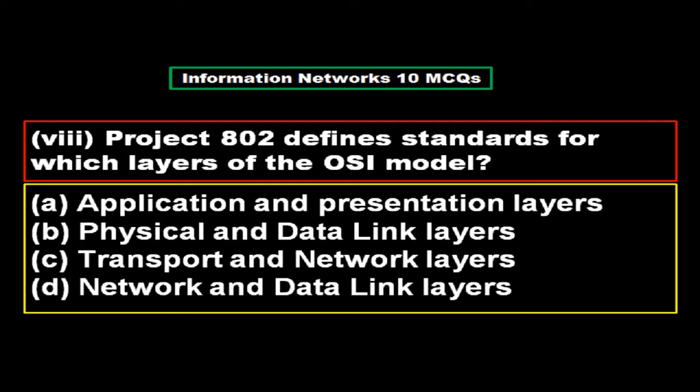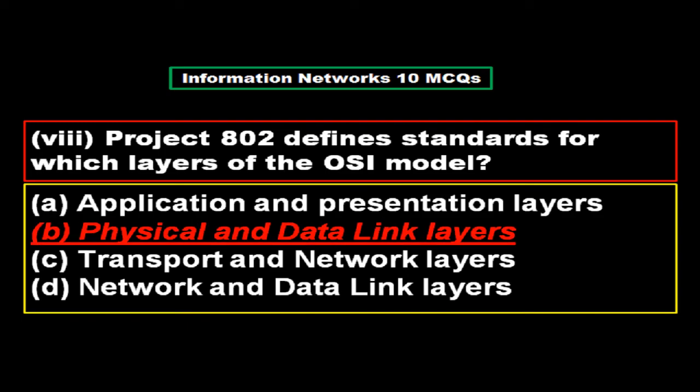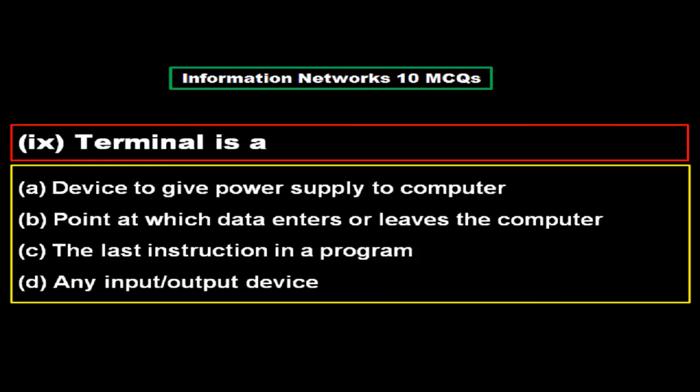Project 802 defines standards for which layer of the OSI model? Option A application and presentation layers, option B physical and data link layers, option C transport and network layers, option D network and data link layers. The right answer is option B, physical and data link layers.